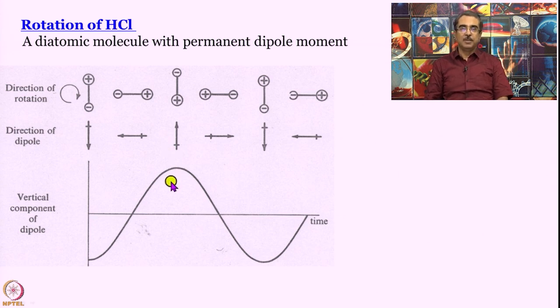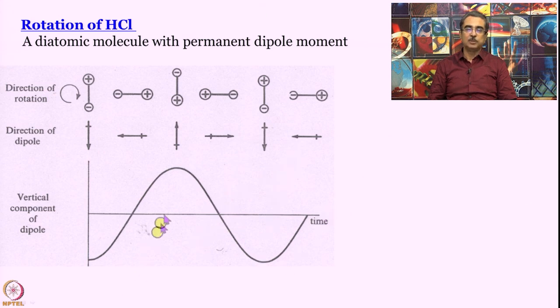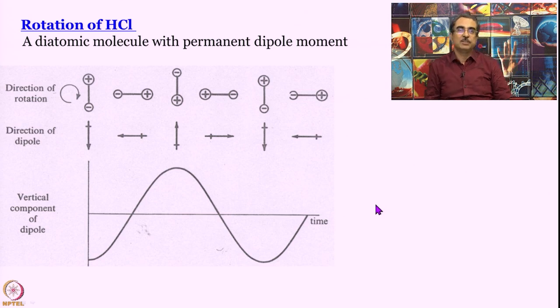You can understand why it is that rotation couples with radiation by thinking like this. Think of this HCl molecule which has a permanent dipole moment rotating. What happens? The direction of dipole keeps changing constantly, and if you plot the vertical component of dipole then what happens? Here it is negative, here it is zero, here it is positive and maximum, then again it is zero, negative and maximum, zero, and so on and so forth. It goes on like a negative cosine wave or something like that.